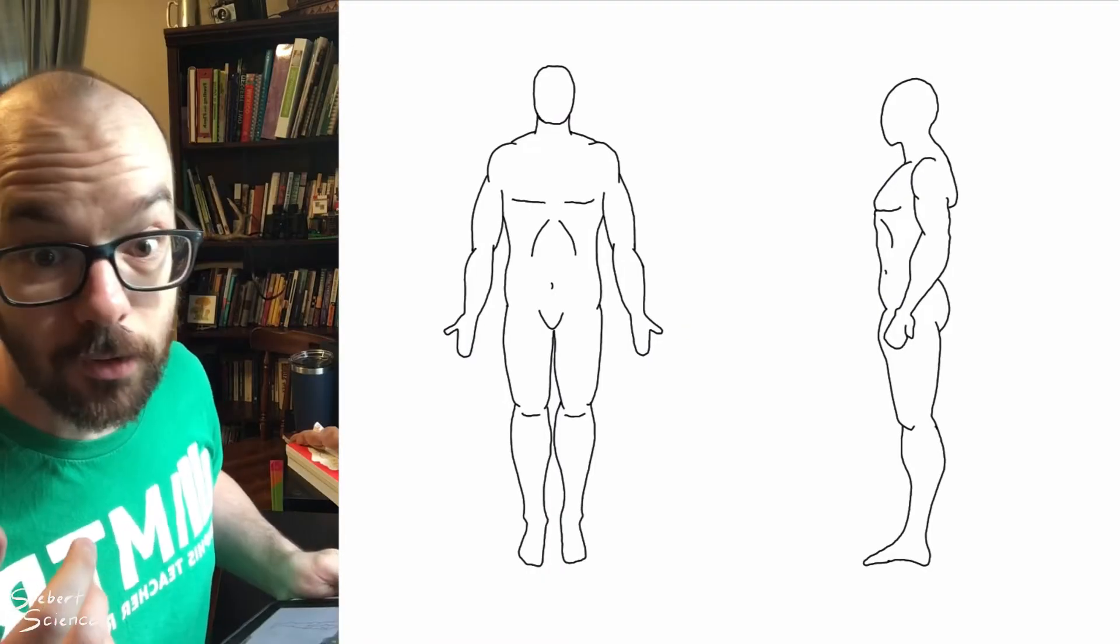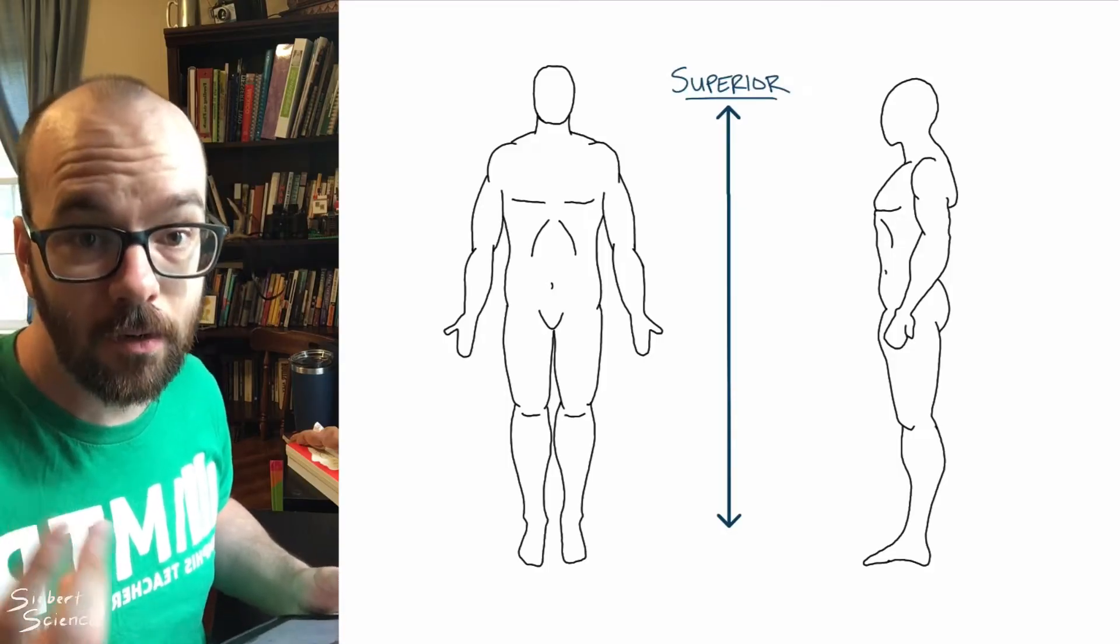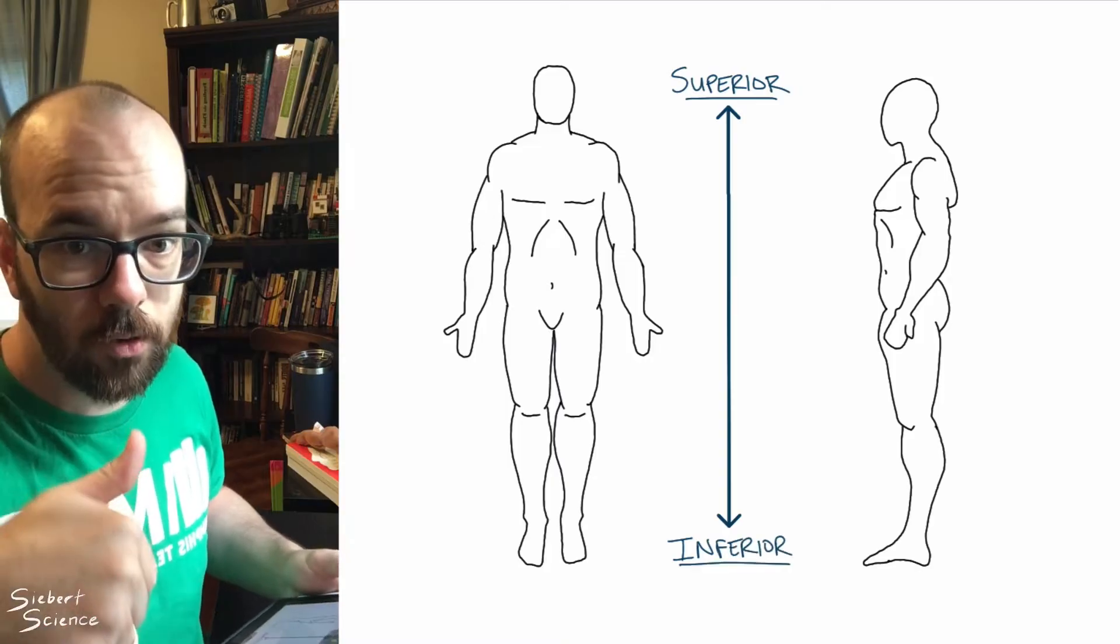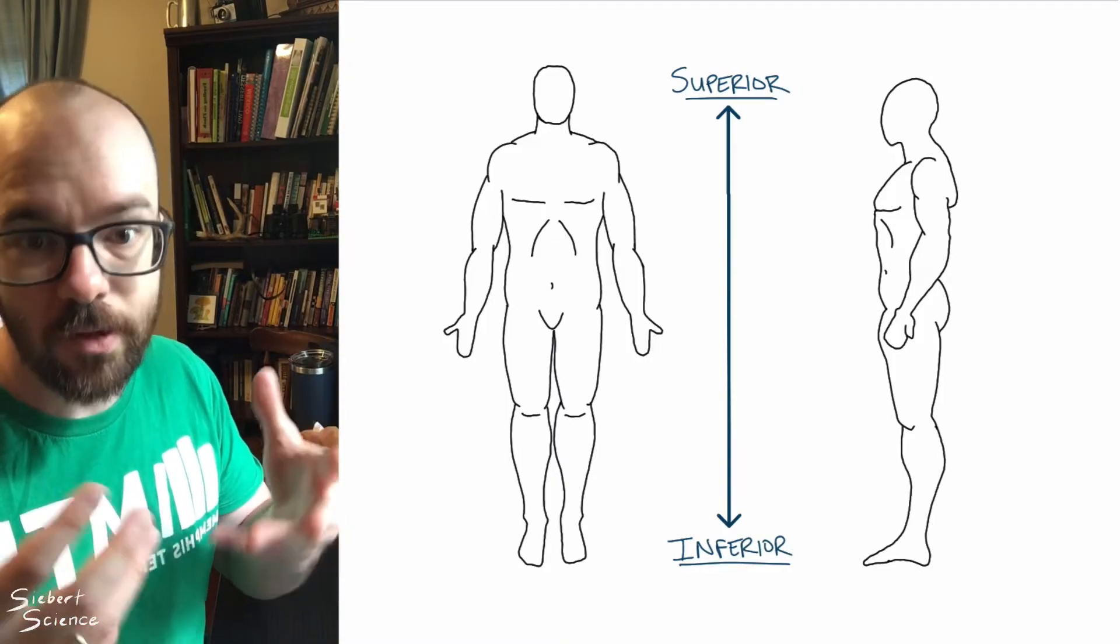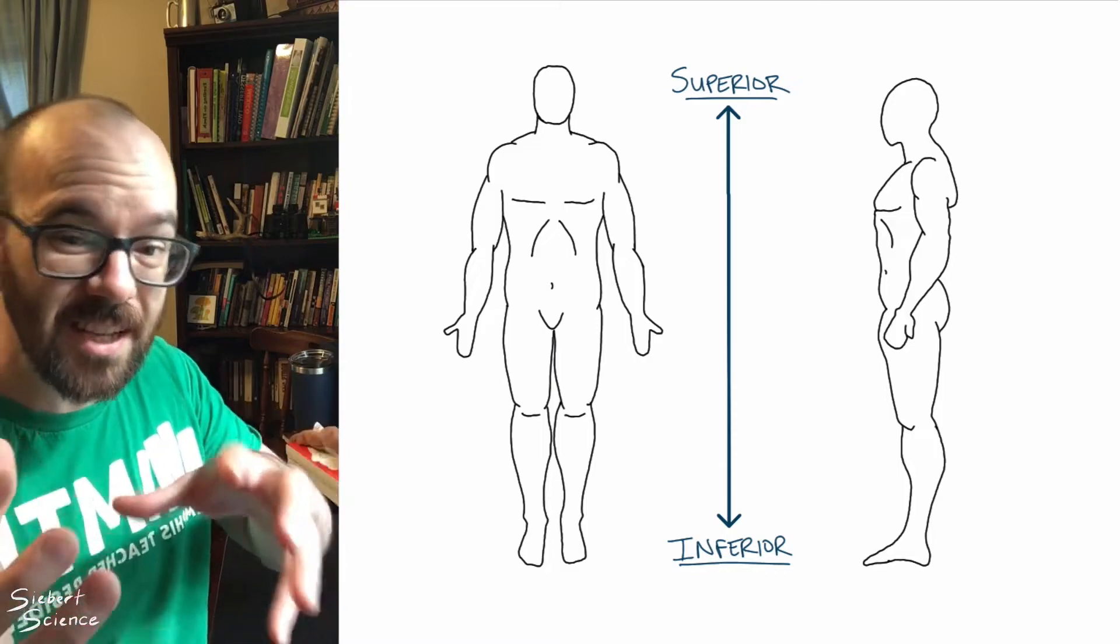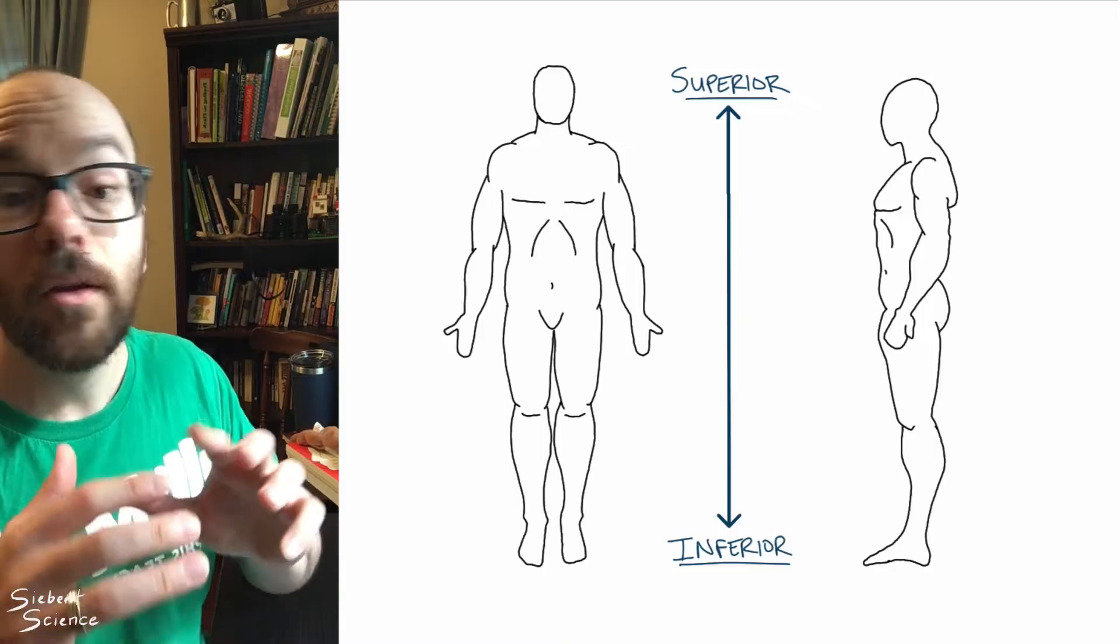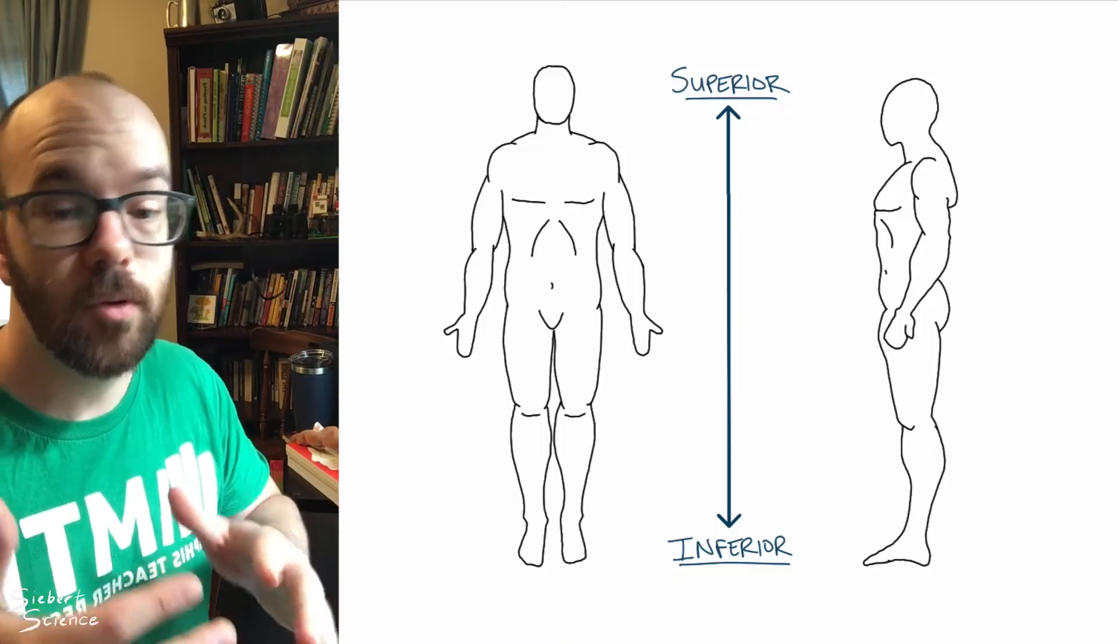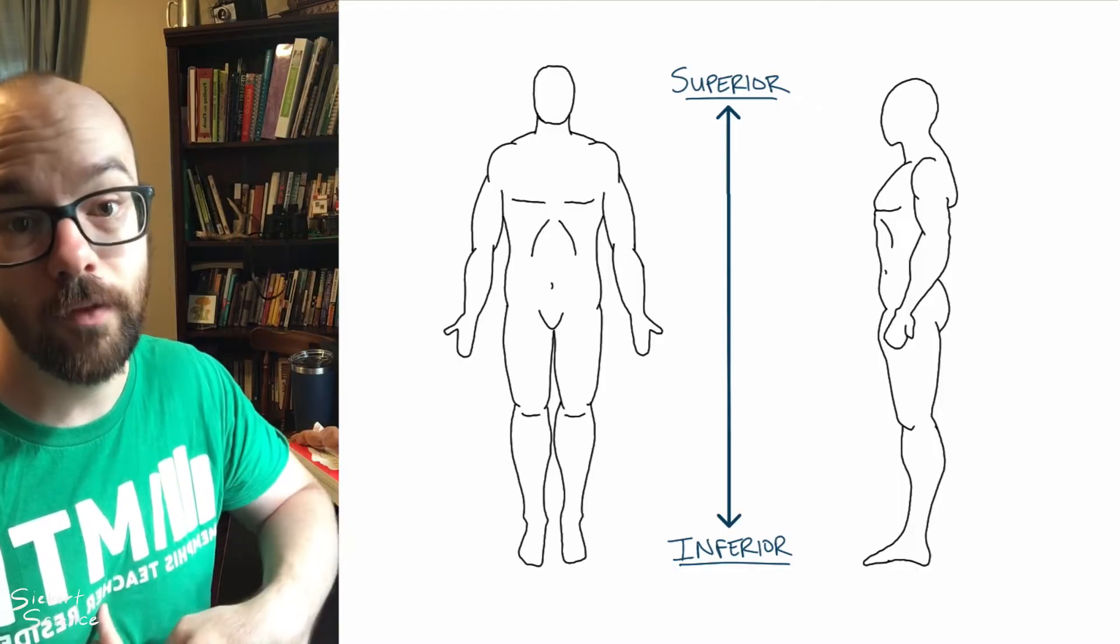First up, literally up, is superior and inferior. Superior just means toward the top of the body and inferior means below. Now, if somebody were lying down, for example, inferior and superior are still oriented the same as if that person were in anatomical position. So let's say we're talking about the heart and the stomach. It doesn't matter if somebody is standing up or lying down, the heart is still superior to the stomach.